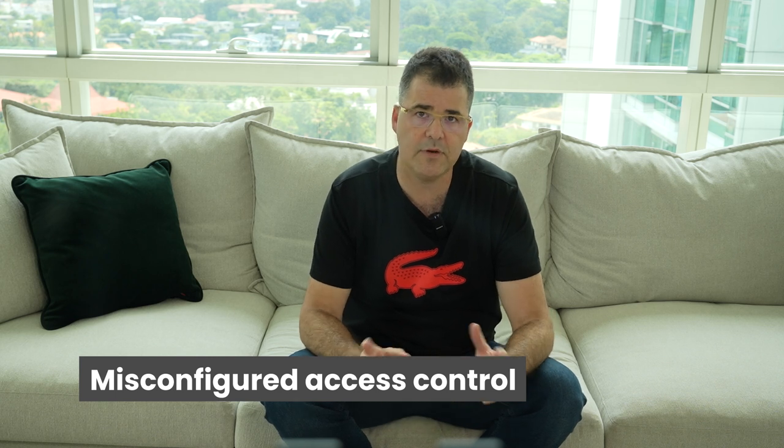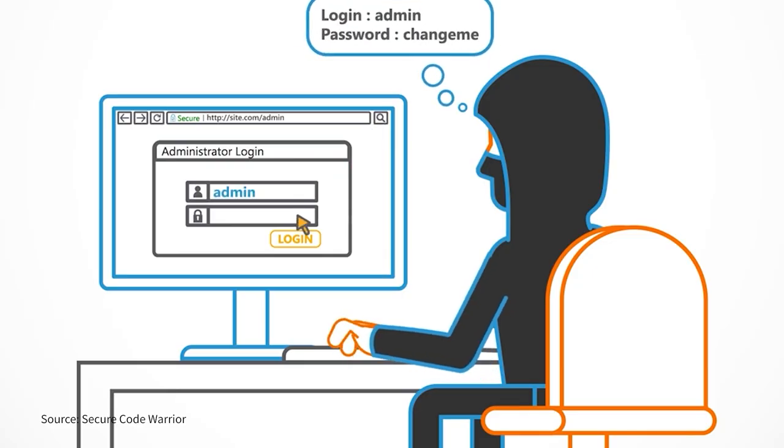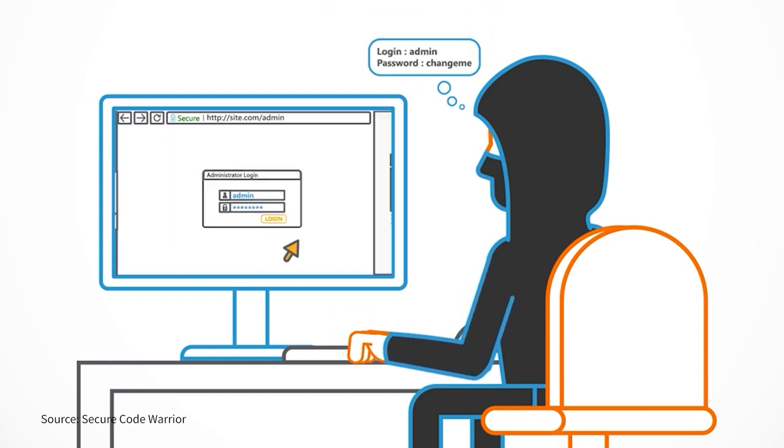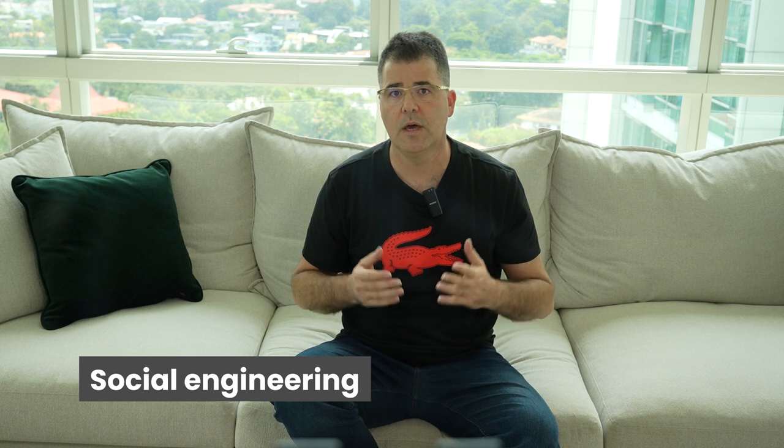Fifth is misconfigured access control — a very common vulnerability that occurs when access control settings are not properly configured or managed. An attacker might exploit misconfigured access control lists or permissions. Sixth is social engineering — this occurs when an attacker tricks a user into granting them access to resources. An attacker might obtain user login credentials through phishing or other social engineering techniques.